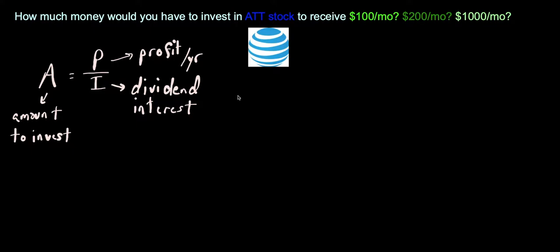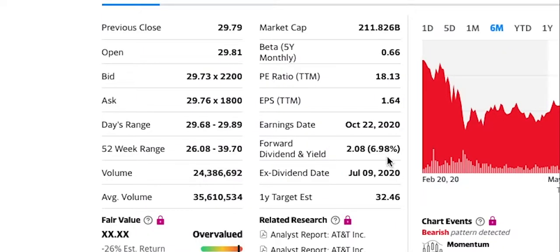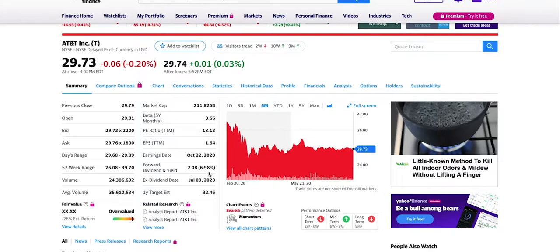So let's take a look at AT&T's information. Okay, so we're on Yahoo Finance here, and this is the page for AT&T stock. And what we want to look at here is the dividend yield, and they offer a 6.98% interest rate for their dividends. But what we're going to assume for this problem is let's just assume that the stock price is going to go sideways. In the last 52 weeks or the last year, this stock has gone from $26.08 to $39.70.